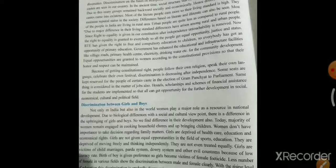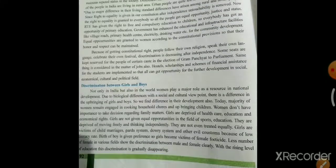Girls were victims of child marriage, पर्दा system, दहेज प्रथा — छोटी उम्र में शादी कर दी जाती थी। ये सब girls के साथ पहले होता था क्योंकि यही system थी। Because of low literacy rates, boys were given preference. Less representation of females in various fields shows the discrimination between male and female clearly. पहले ऐसे ही differences थे।